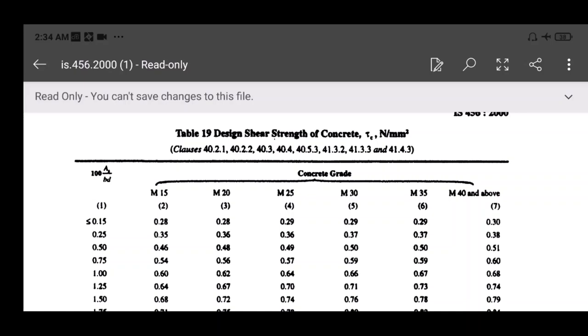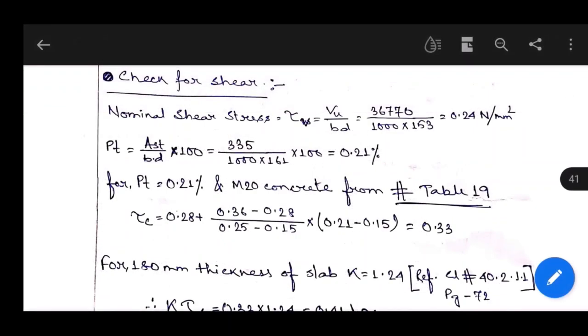0.21 is not in the list but lies between 0.15 and 0.25. For M20 grade concrete, if percentage is 0.15 then tau_c is 0.28, and for 0.25 the value is 0.36. For 0.21 it lies between 0.28 and 0.36. We have to interpolate: tau_c equals 0.28 plus (0.36 minus 0.28) over (0.25 minus 0.15) times (0.21 minus 0.15), equals 0.33.